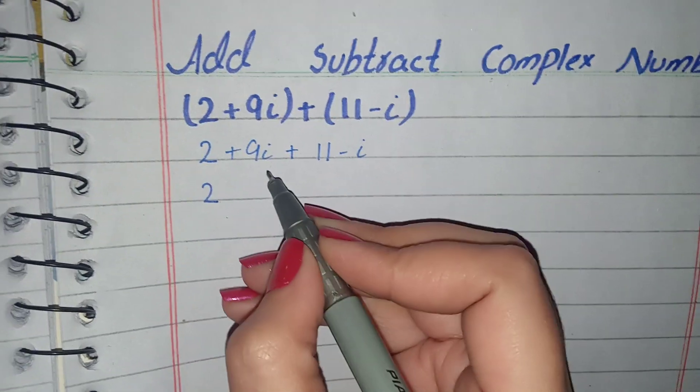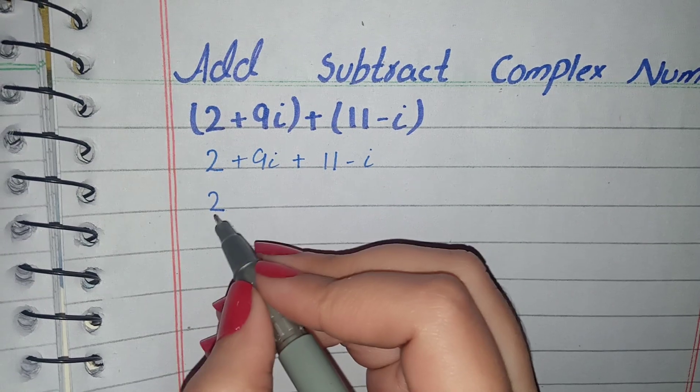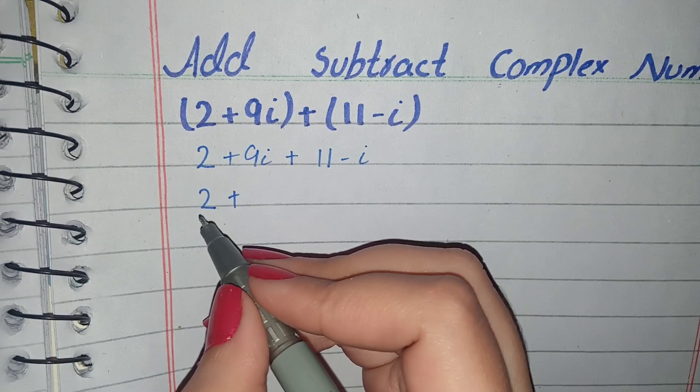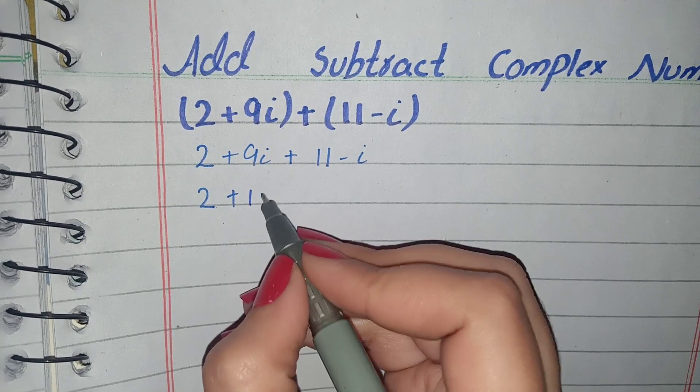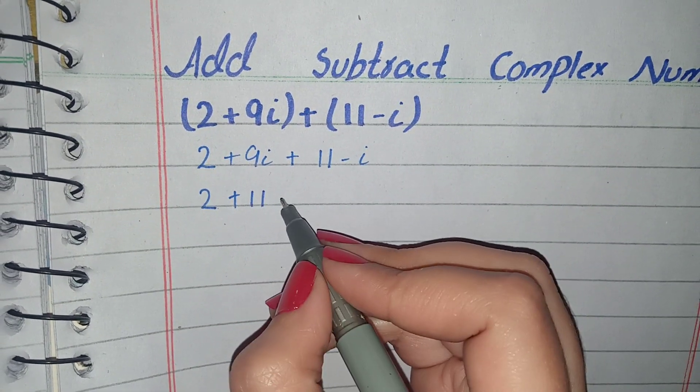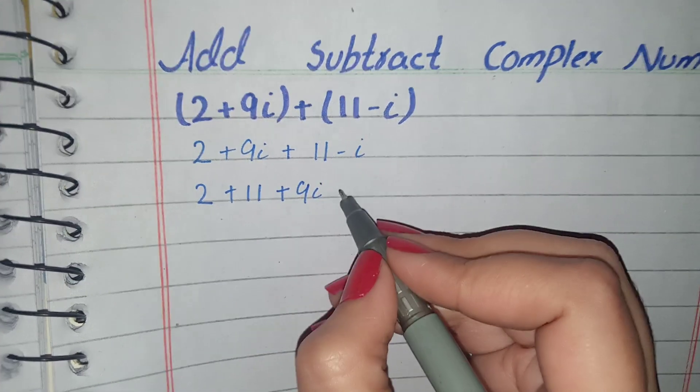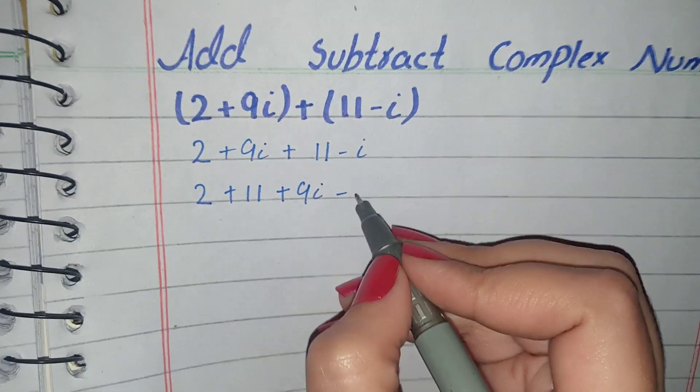Then in this step we will arrange real numbers: I write 2 then I write 11. Then I will write complex terms, that is 9i minus i.